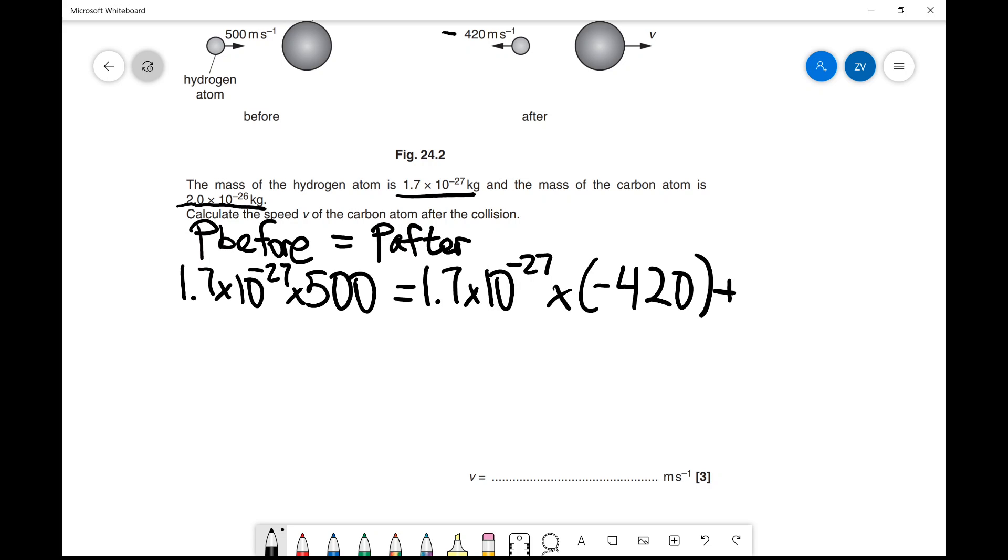Now I'll add the mass of the carbon atom, 2.0 × 10^-26, multiplied by the speed v, which is what we're looking for.